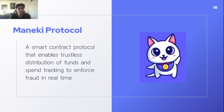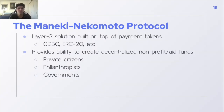We decided to come up with the Maneki Protocol. The Maneki Protocol is a smart contract protocol that enables trustless distribution of funds and spend tracking to enforce fraud prevention in real time. The Maneki Nekomoto Protocol is a Layer 2 solution built on top of a payment token, such as a CBDC — a central bank digital currency — or an ERC-20 token.